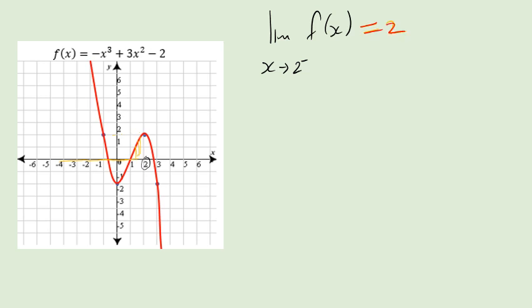The limit of f of x as x approaches 2 plus — we're going from the right-hand side of 2, getting closer and closer. We're approaching that value. Let's double check: minus 2 cubed is minus 8; 3 times 4 is 12; 12 minus 8 is 4; 4 minus 2 is 2. The graph is not drawn perfectly, but approximate scaling gives you 2.